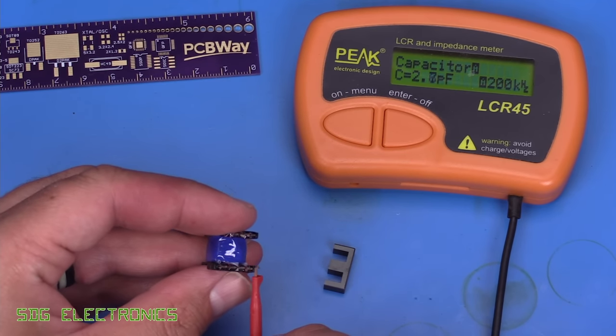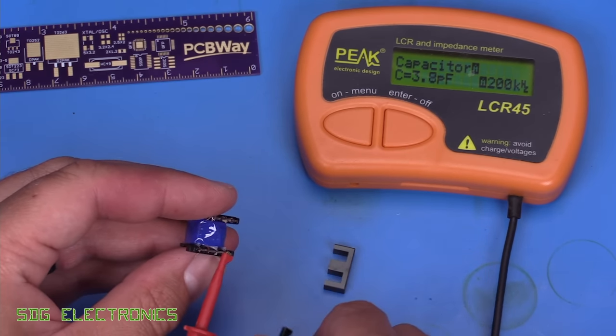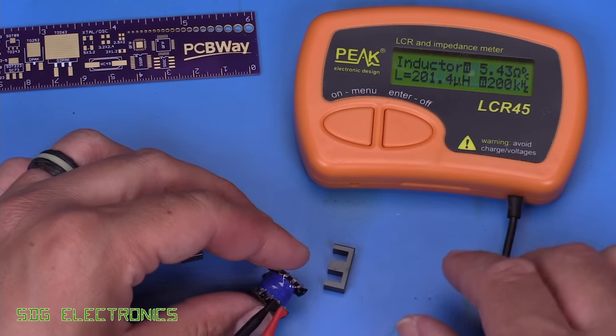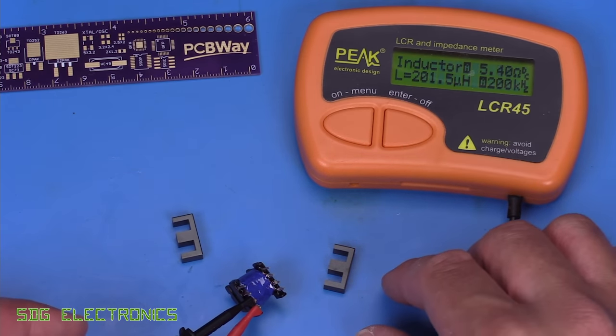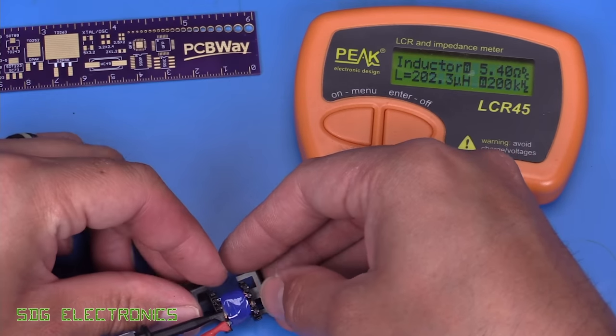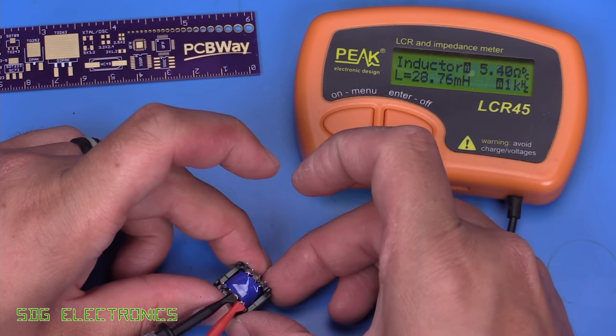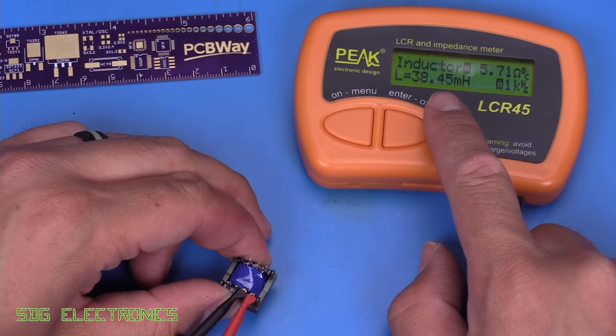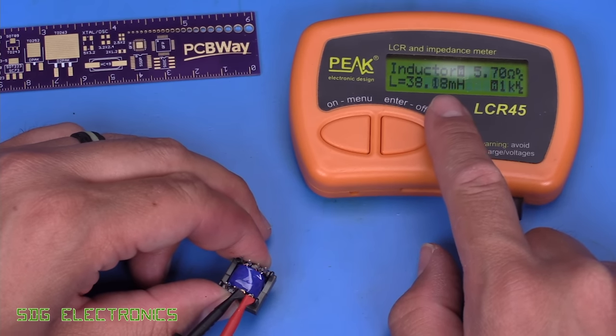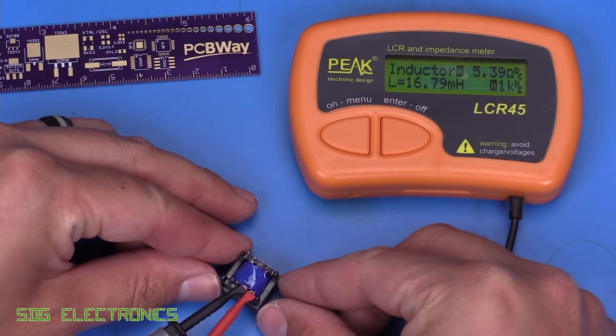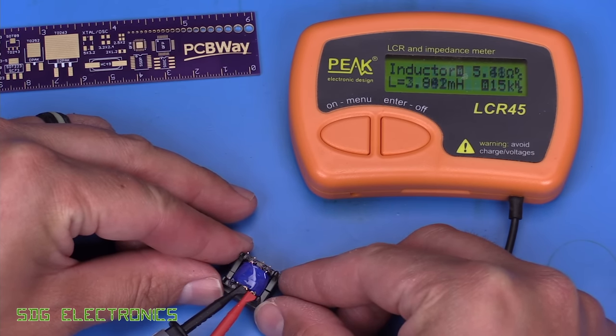So we connect up the LCR meter to the primary windings here. And it shows us an inductance of about 200 microhenries or so. Now if I put the inductor core into the transformer and clamp it together tightly, you can see the inductance shoots up to about 40 millihenries or so. And as we change the gap between these two halves of the transformer, you'll notice the inductance goes up and down.